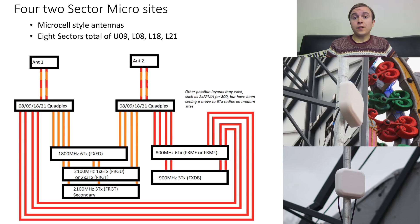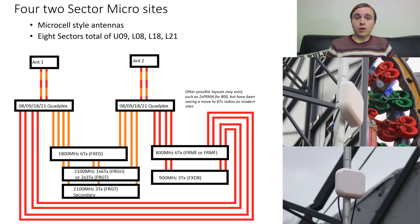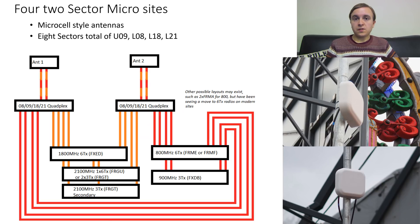O2 didn't just have macro temporary sites at Winter Wonderland — they also have four two-sector micro cells. These all have U09, L08, L18 and L21. As each one is two-sector, the configuration is pretty much the same as the previous site but without L23 and with each base station only serving two out of the possible three sectors. As the antennas here are only two ports, you need to quadriplex all the bands together in order to feed them into the antennas, although they could also be using a combination of diplexers to achieve much the same functional effect.